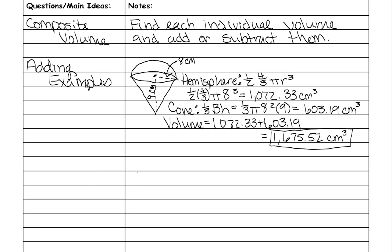The next example looks like a mailbox. You make a prism without the top, and the top will be a semicircle — a half cylinder. The bottom of the prism is 9 inches. Since the whole width is 9 inches, the diameter of the cylinder is also 9 inches, which means the radius is half of that: 4.5 inches.